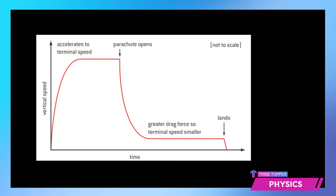Now let's look at how the vertical speed varies with time — this is a very important graph. You will see that vertical speed first increases because of the weight initially, then gradually that increase slows down and it becomes constant. At the stage when the parachute opens there is a fall in the vertical speed immediately, because the net force was acting upward for a moment. Then gradually the drag balances out, the weight and drag become equal, and the terminal speed is gained again.